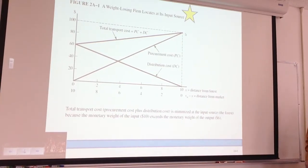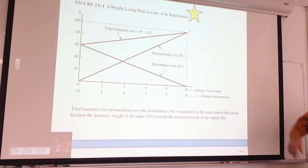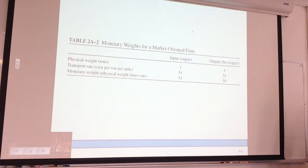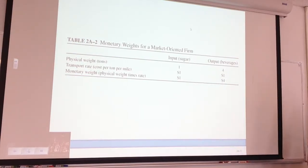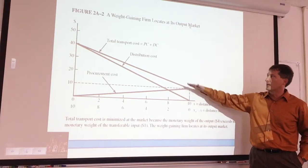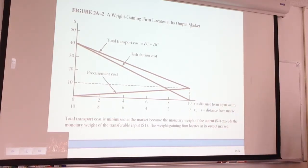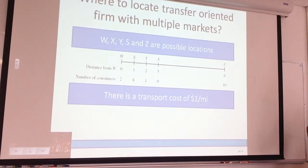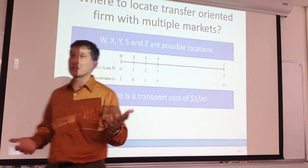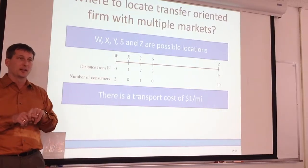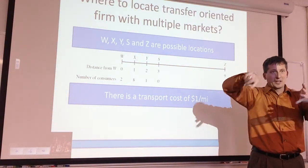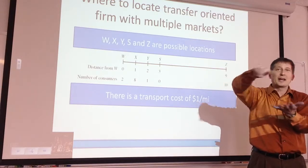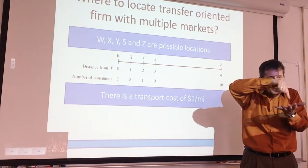So if we're a weight loser, we locate towards the input or towards the output? Input. So their costs were minimized at the input, and for our weight gainers — beverages — our weight goes up from one to four, so for weight gainers the cost will be minimized closer to our output location. Maybe that's our Steinway piano or something historically. Okay, what if we have more than one product or more than one customer, and there's a location question? We're going to add another level of detail — instead of just locating where the output is, we can maybe be even more specific. Now that we've decided to locate near our customers, exactly where should we locate?